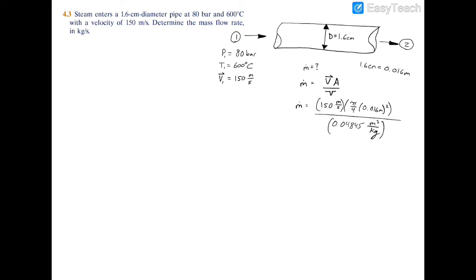Now let's do unit cancellation. You have meters times meters up top, which is meters squared, times meters per second, giving meters cubed per second. You have meters cubed per kilogram on the bottom.